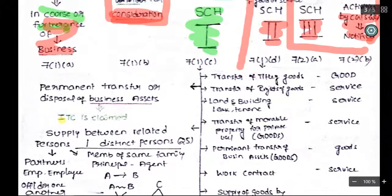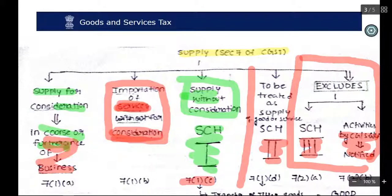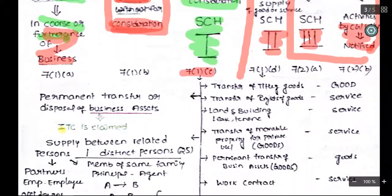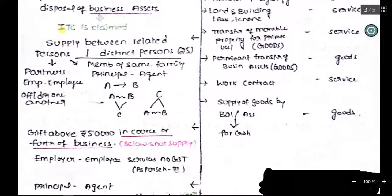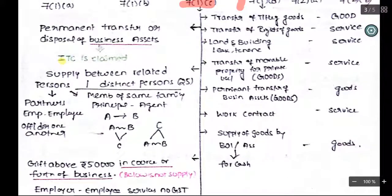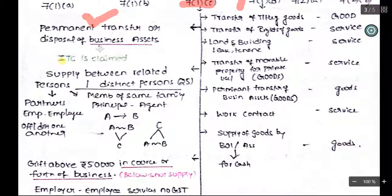Section 7(1) covers Schedule 1. Schedule 1 says supply without consideration — that is, even if in the following cases there is no consideration, these are still to be treated as supply of goods and services.